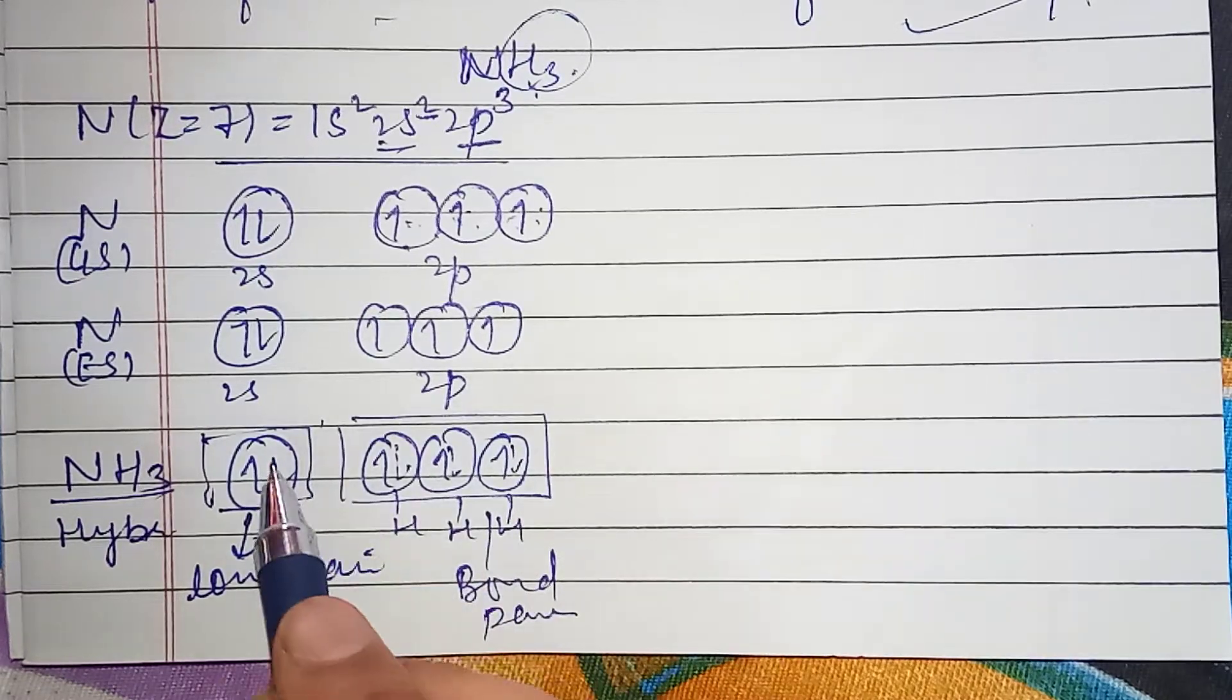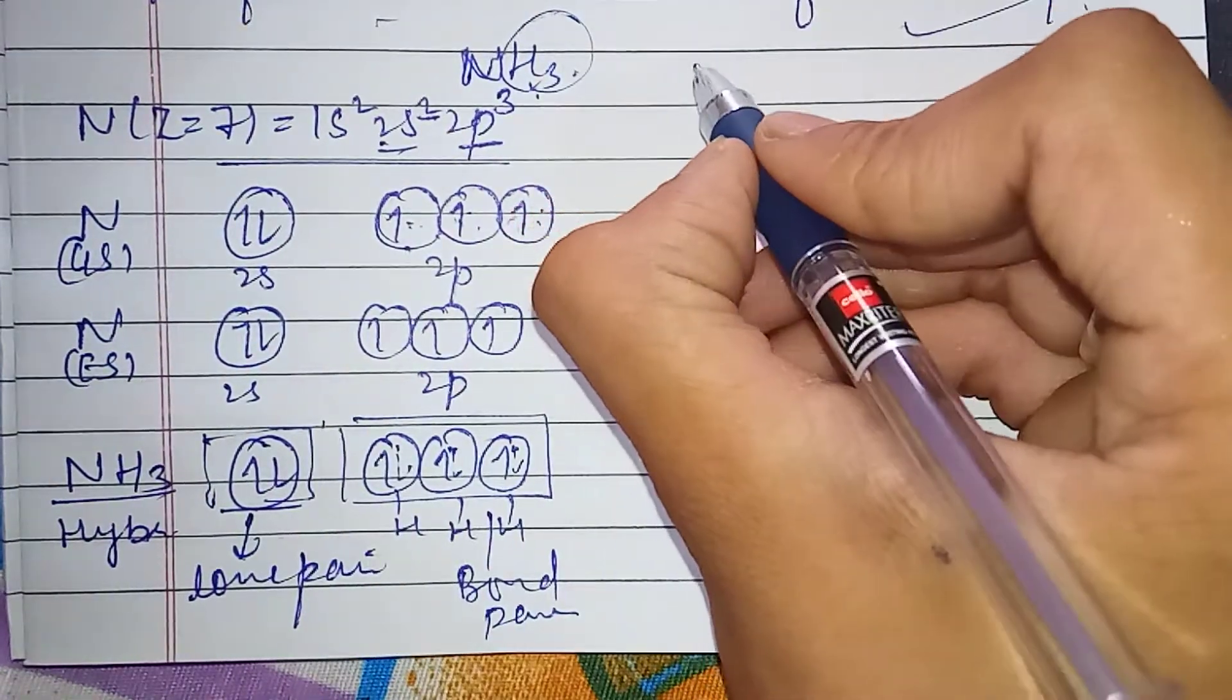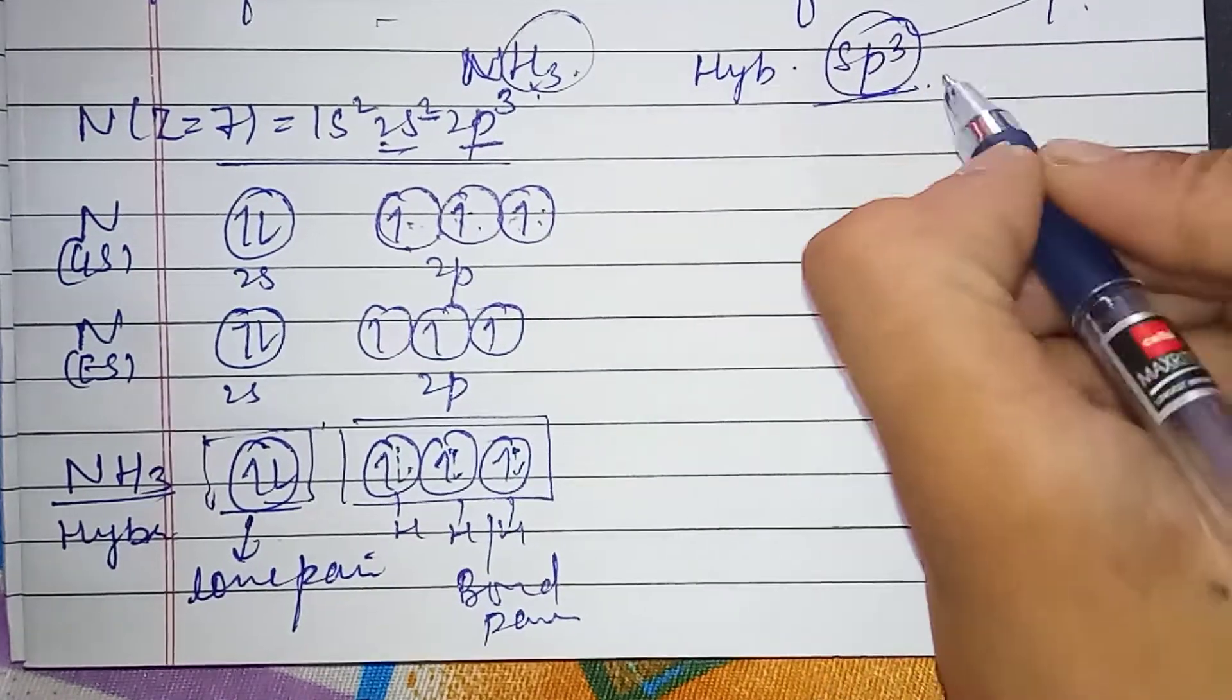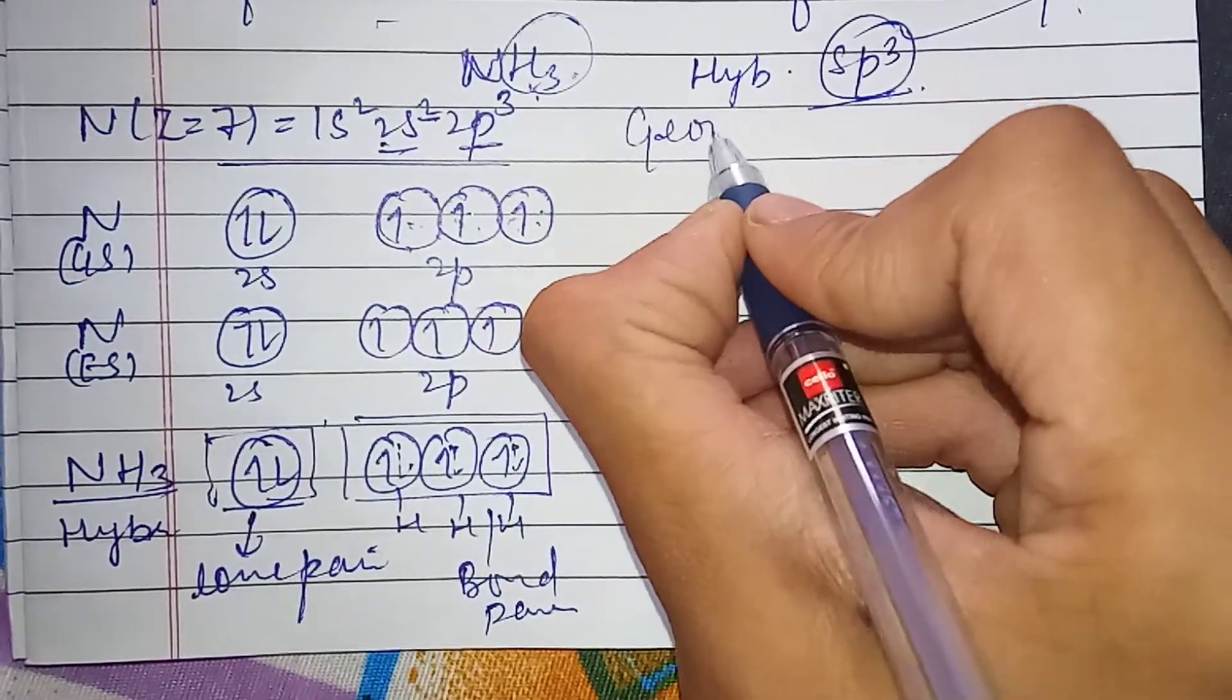So it is s1p3, so our hybridization is sp3. And now next is our geometry.